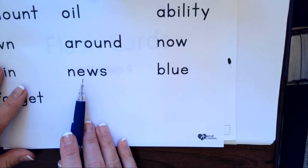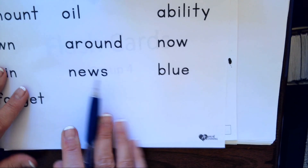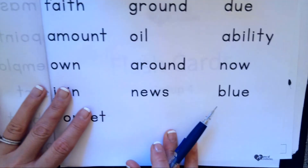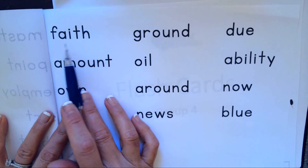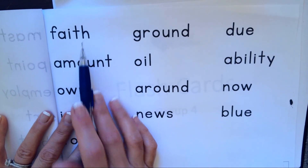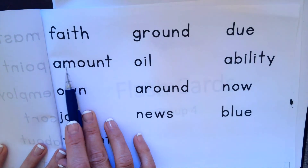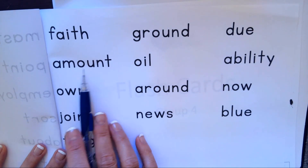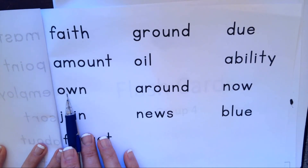E-W makes oo, N-E-W-S, news. A-I makes a, T-H makes th, F-A-I-T-H, faith. O-U makes ow, A-M-O-U-N-T, amount. O-W makes o or ow — I'm going to try it both ways: own or own. It's own.